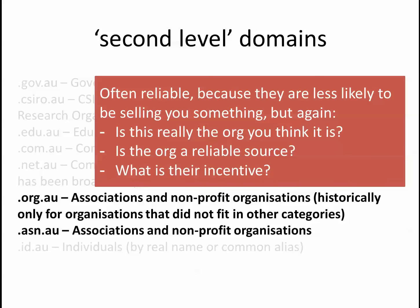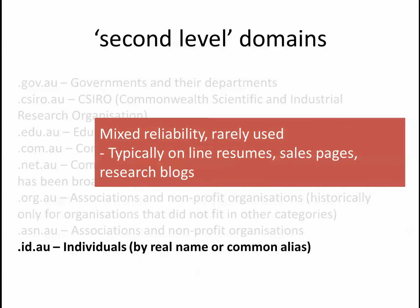The .id.au is personal individual sites — people's resumes, sales pages. The original plan was .org for not-for-profits, .com for commercial, .edu for educational, .id for personal. But people just grab whatever. The last one, .id.au, I've never really seen it in use much. You won't see many of those. Be aware they're kind of mixed in how reliable they are. Mostly you're going to be looking at .gov.au, .coms, and .edu.au — ranking in that order of reliability, with .gov.au at the top.